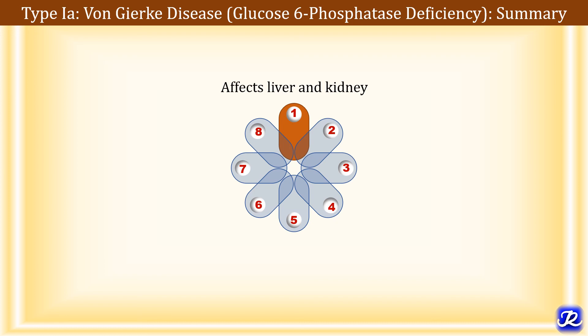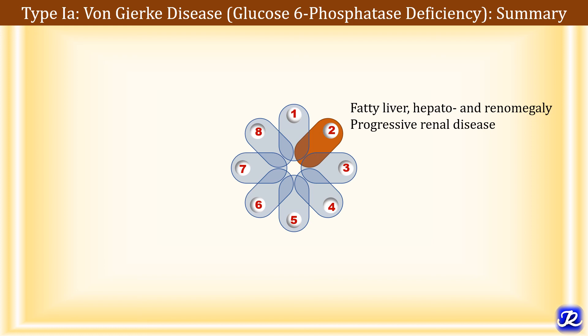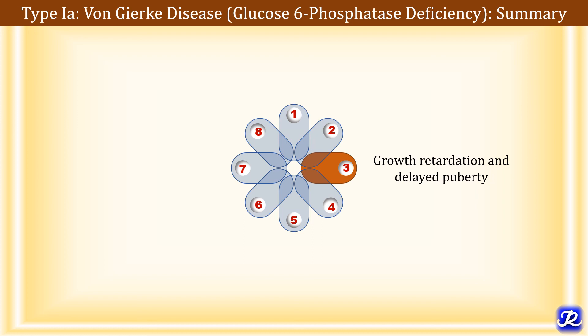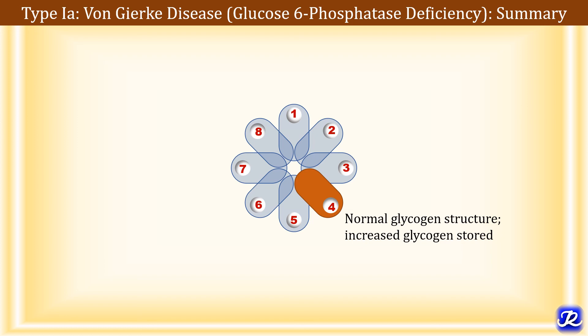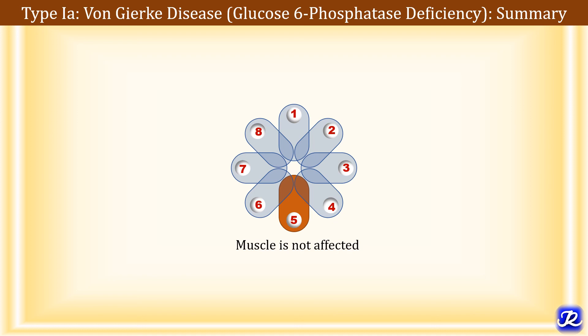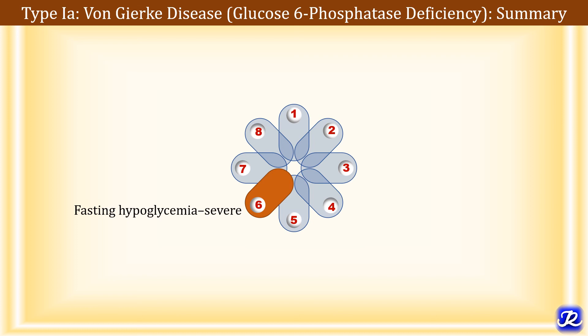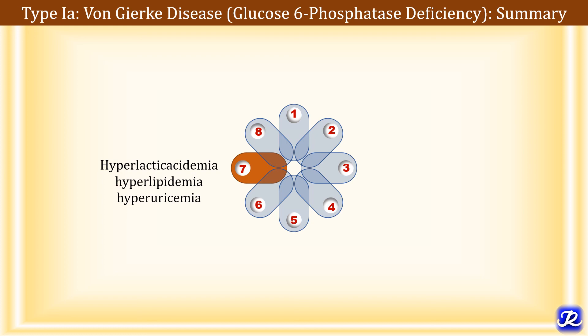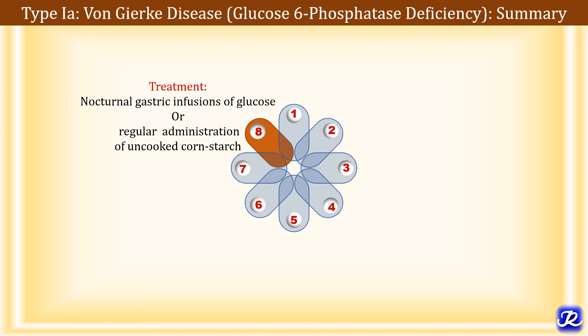Let us summarize Von Gogh disease, which is type 1A glycogen storage disease occurring due to defect in glucose 6-phosphatase. It is autosomal recessive and affects liver and kidney. The condition results in fatty liver, hepatomegaly, renomegaly, and progressive renal disease. The patient presents with growth retardation and delayed puberty. There is accumulation of glycogen in liver but the structure of glycogen is normal. Muscle is not affected as glucose 6-phosphatase is not present in muscle. There is severe fasting hypoglycemia, hyperlactacidemia, high anion gap lactic acidosis, hyperlipidemia, and hyperuricemia. Treatment is symptomatic: nocturnal gastric infusion of glucose or regular administration of uncooked corn starch. I hope this video will be helpful to you. Thank you for watching.